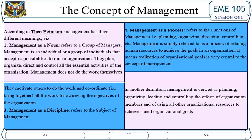Second, management as a discipline refers to the subject of management. Third, management as a process refers to the functions of management — planning, organizing, directing, controlling, etc. Management is simply referred to as a process of relating human resources to achieve the goals in an organization. Realization of organizational goals is very central to the concept of management.